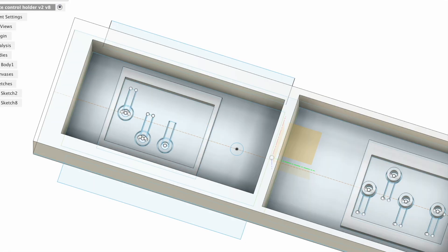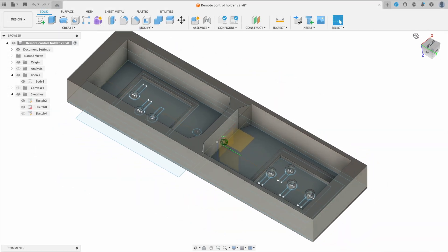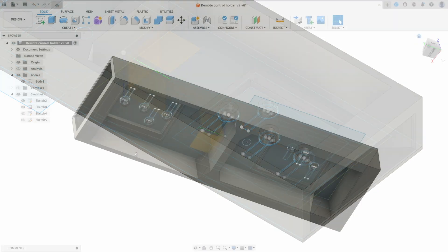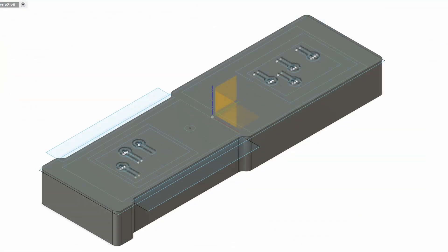Since one of the remote controls is IR, I have to add a window to the front. I want my opening flush with the clear lens on the remote so it looks clean, and I want the opening as wide as possible so the IR transmitter doesn't have tunnel vision. Here I'm just rounding off all the edges.